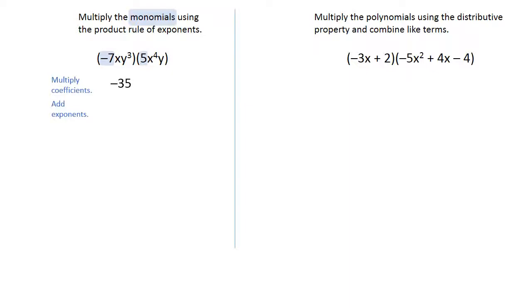Now let's look at the variables. We have an x and an x to the 4th, and there is an imaginary one on that first x. We're going to add those exponents, and 1 plus 4 is 5, so x to the 5th power.